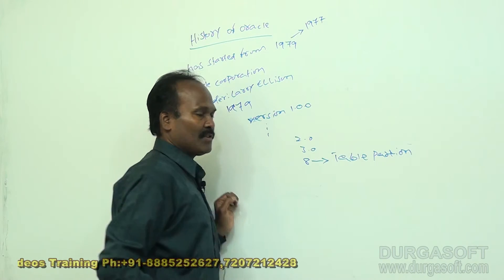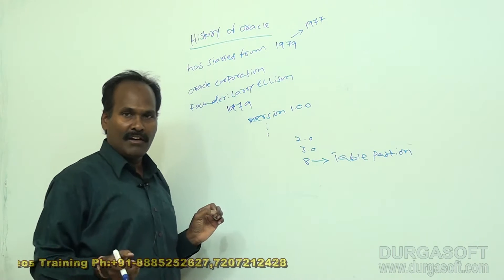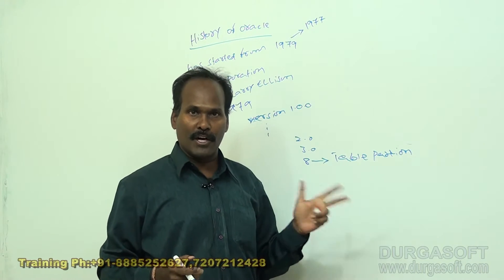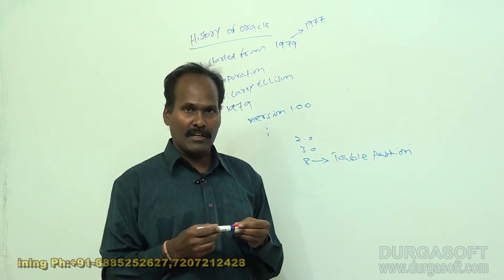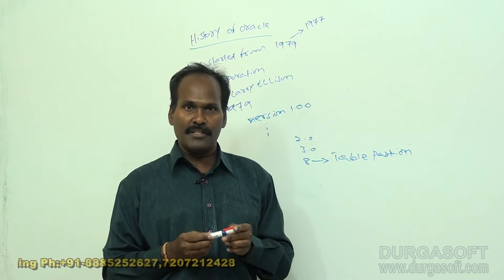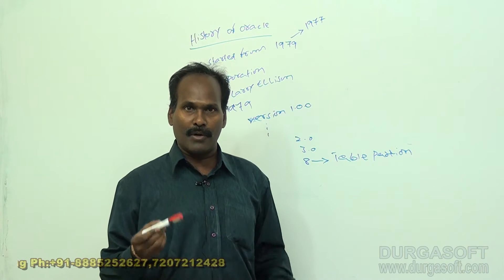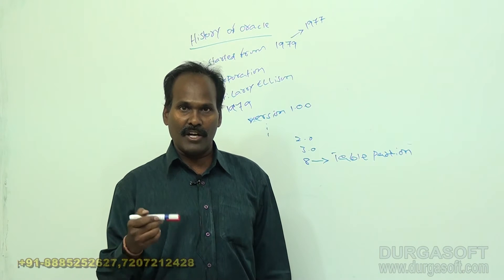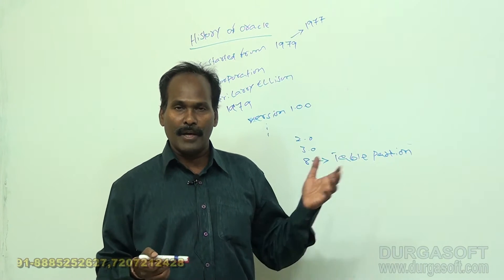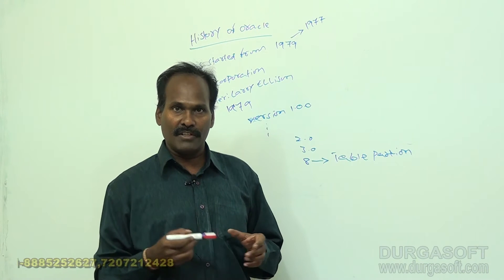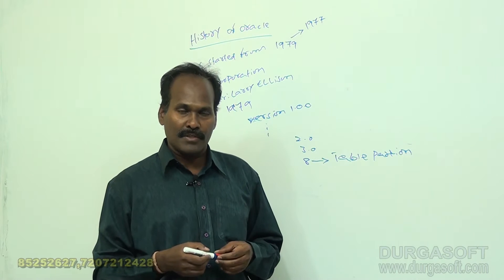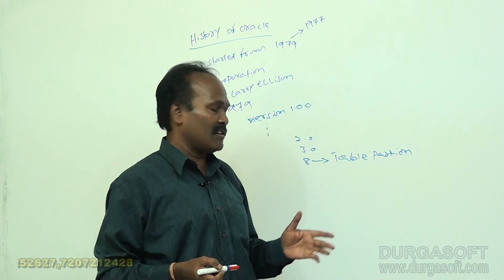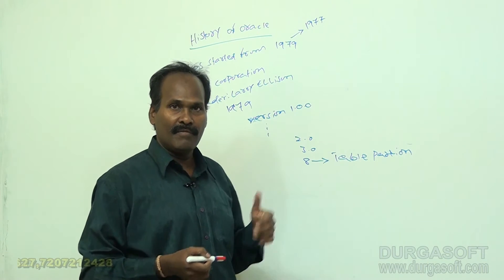Table partitioning means we can break up a large table into smaller modules. When a large table is divided into smaller partitions, retrieval of data becomes very easy — within no time we can access the data. This concept of table partitioning was introduced in version 8.